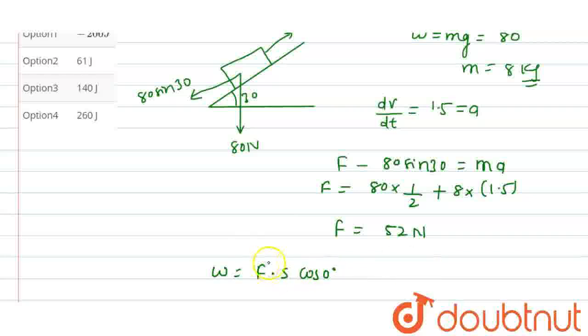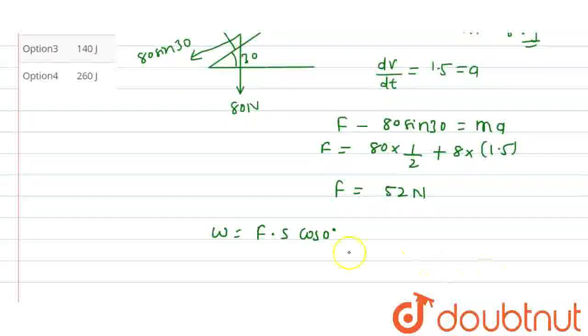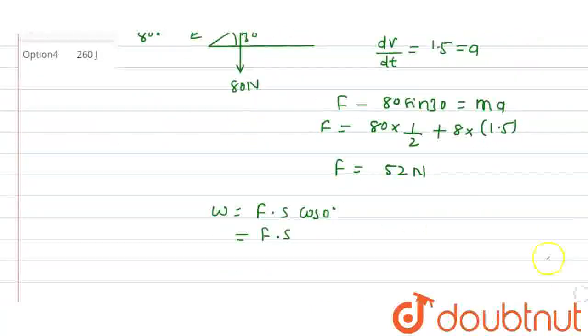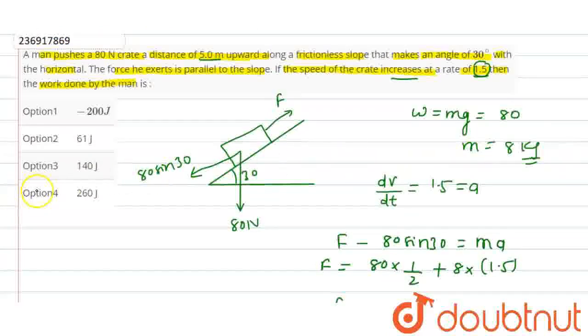Basically, how much is the net force and displacement? Displacement in question is 5m upward. Displacement 5m and force 52. 52 into 5 equals 260 joule. 4th number option.